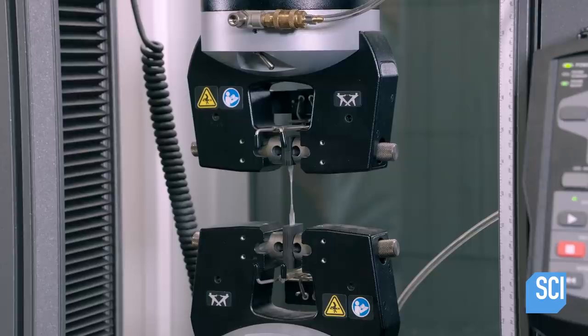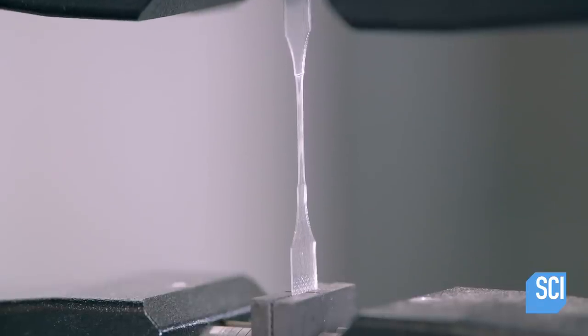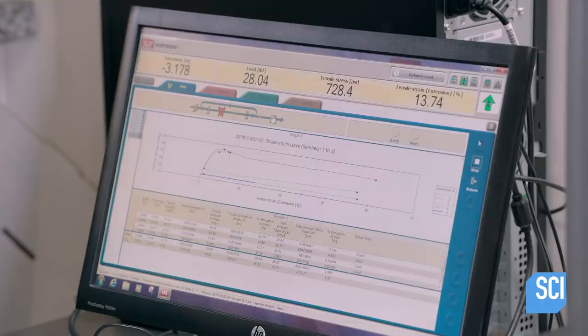With a lens strip clamped at both ends, the machine pulls it from the top. How far it stretches until it breaks is a measure of its strength.